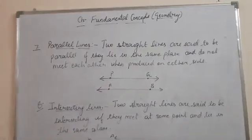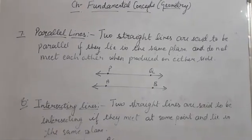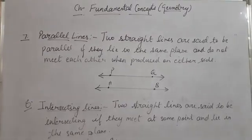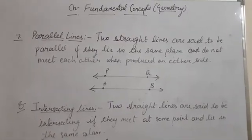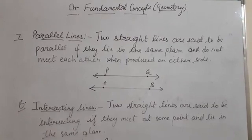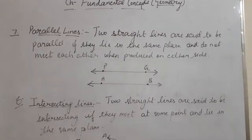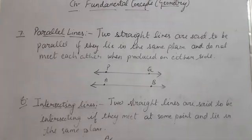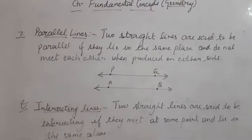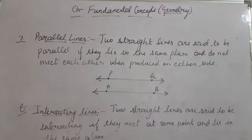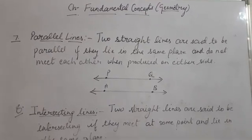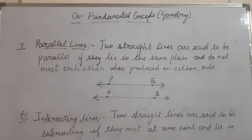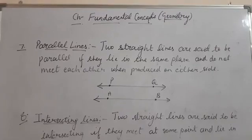The next concept is parallel lines. Two straight lines are said to be parallel if they lie in the same plane and don't meet each other when produced on either side. These lines appear in the same plane and continue to move in either direction but will never meet each other at any point.